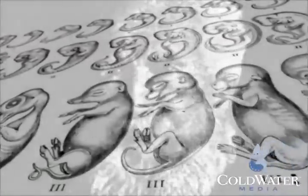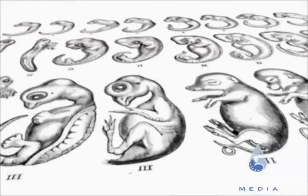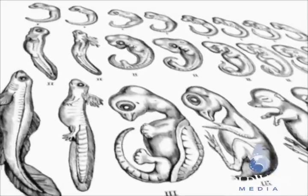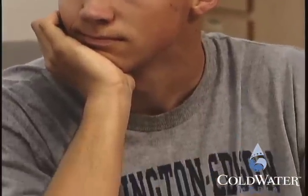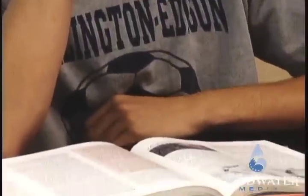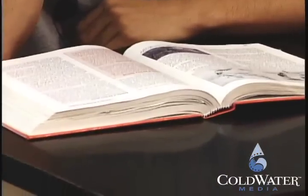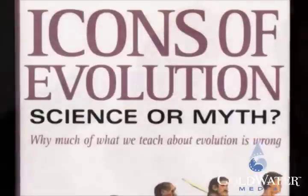But just how important are Haeckel's embryos? And does a single textbook mistake even matter? If Haeckel's embryo drawings were the only problem with biology textbooks, I would agree that this is an isolated error. The problem is that it's not the only problem. In fact, says Wells, today's textbooks are filled with outdated examples for evolution which many evolutionary biologists no longer consider good science. In a recent book, he calls these the icons of evolution.